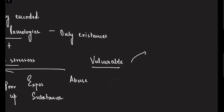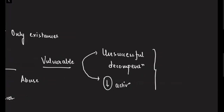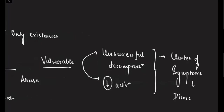When genetic vulnerability is paired with environmental stressors, what happens is either unsuccessful decompensation or reduced activation. For example, cortisol is released during exam stress to help us cope, but in genetically vulnerable people there is unsuccessful decompensation. This manifests as a cluster of symptoms forming the disorders we study in DSM or ICD.